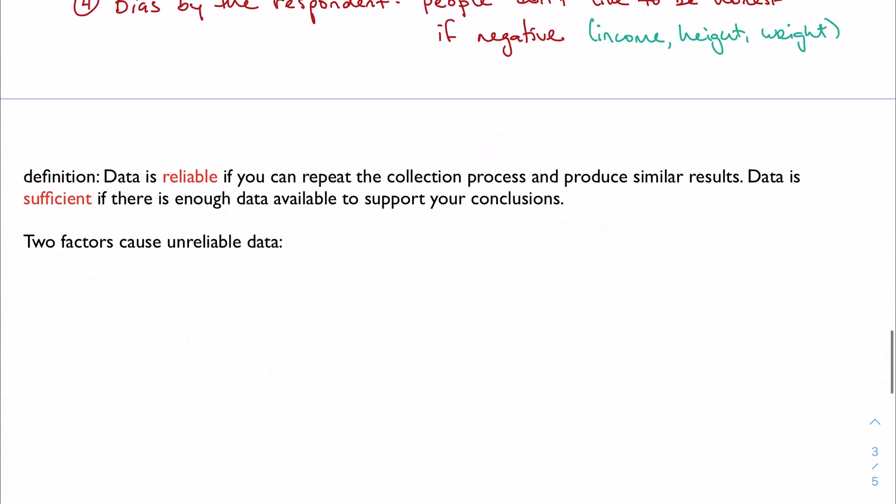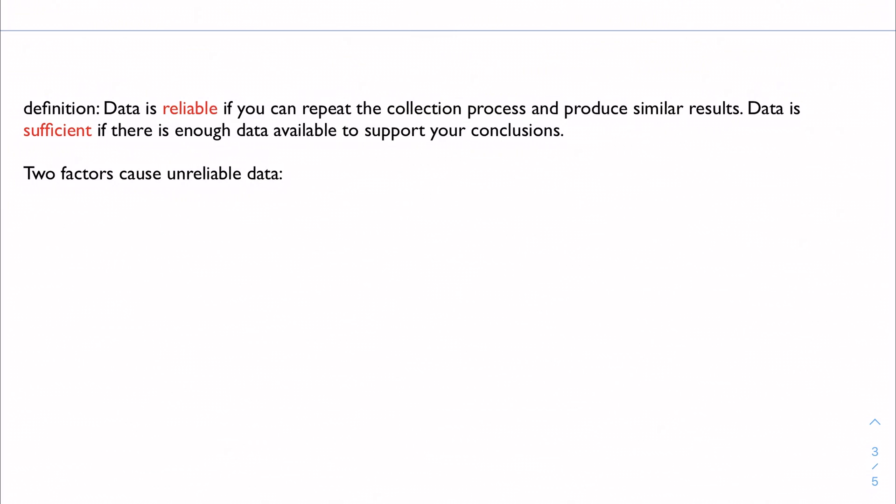So how do we know if our information is biased and how do we know if we can be sure that the data we're using is accurate? Well, data is reliable if you can repeat the collection process and produce similar results. I can do the trial over and over and over again, and I will always get roughly plus or minus the same type of results. Data is sufficient if there's enough data available to support your conclusions. If I'm surveying the entire American population, but I only talked to a hundred people, that's probably not enough data. There's all kinds of metrics and benchmarks. I've always heard maybe 10%, but I'm also kind of just spitballing here. But if you can get about 10% of your population, that's usually okay. But every resource you look at gives you a different number, so I won't give you a specific guideline.